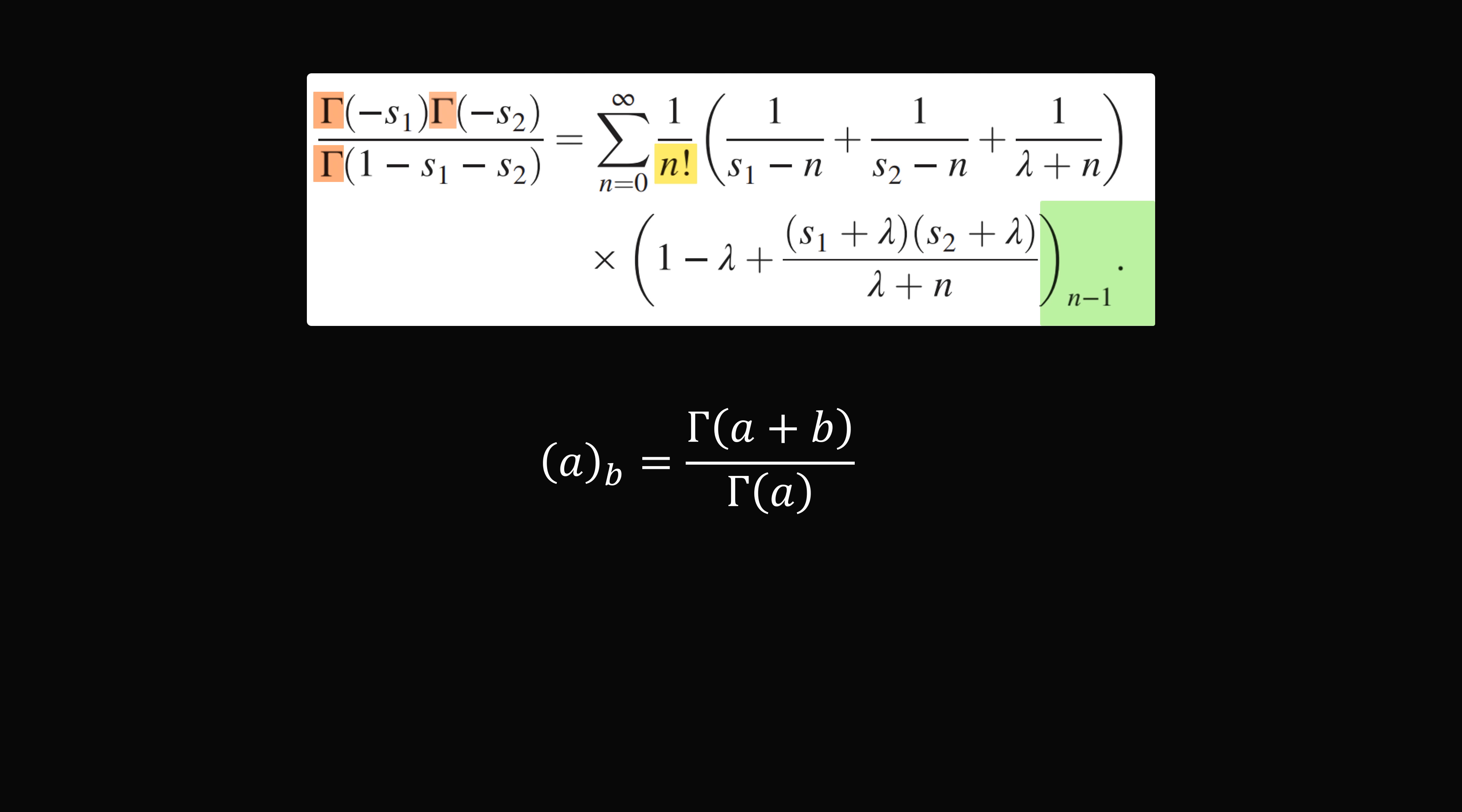So we have parentheses (a) subscript b, which will be equal to a ratio of gamma functions. It'll be equal to gamma of (a + b) divided by gamma of a.